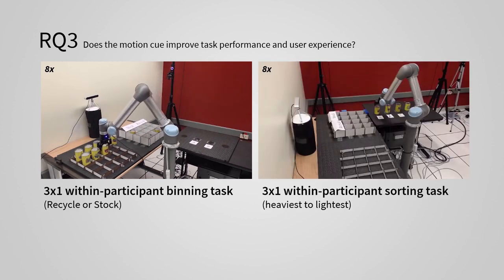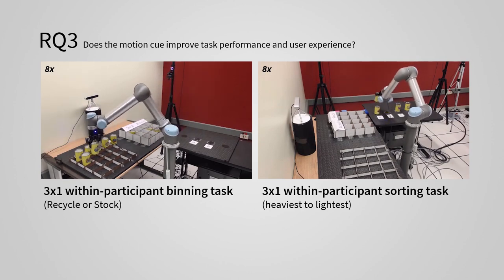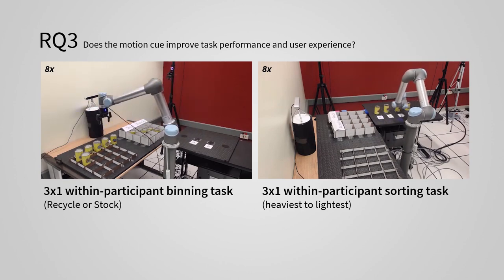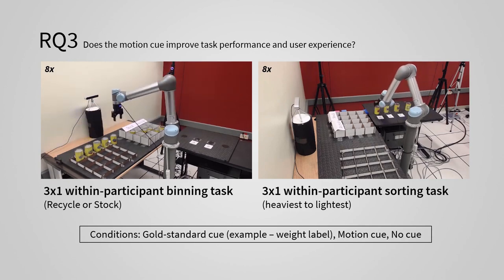In the second task, participants sort four cans from heaviest to lightest. Both tasks have three conditions. In one condition, participants receive a gold standard cue. For example, the cans were labeled with a number indicating the virtual weight. In the second condition, participants receive the motion cue. And in the third condition, they receive no cue.